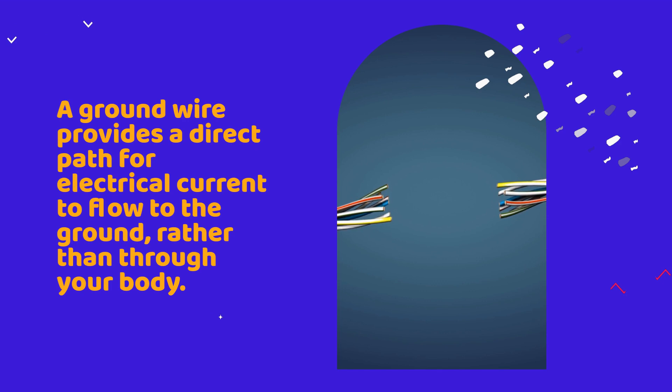A ground wire provides a direct path for electrical current to flow to the ground, rather than through your body.